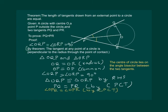Which means that OP is the angle bisector of angle QPR. And hence we come to the conclusion that the center of the circle lies on the angle bisector between the two tangents.